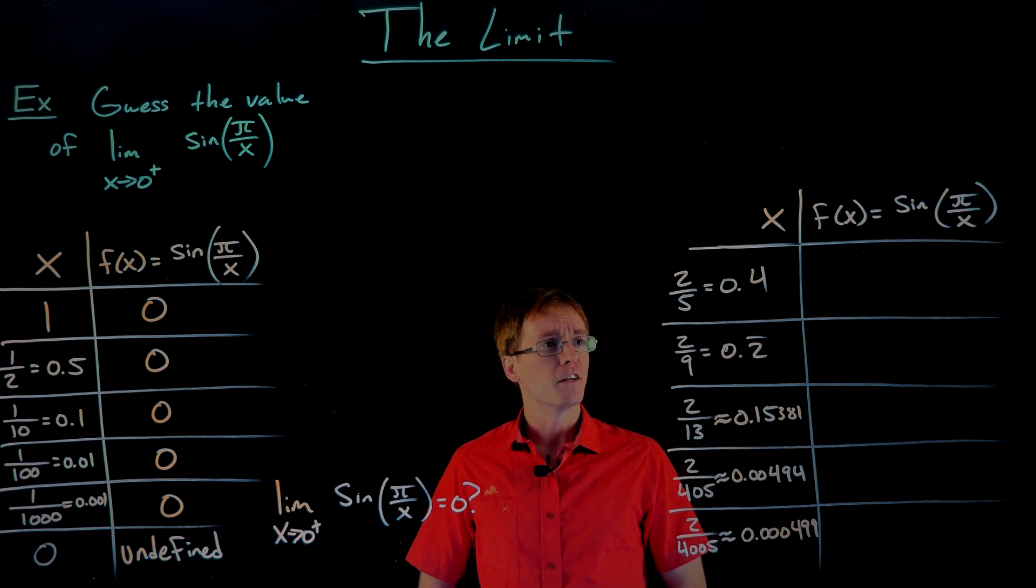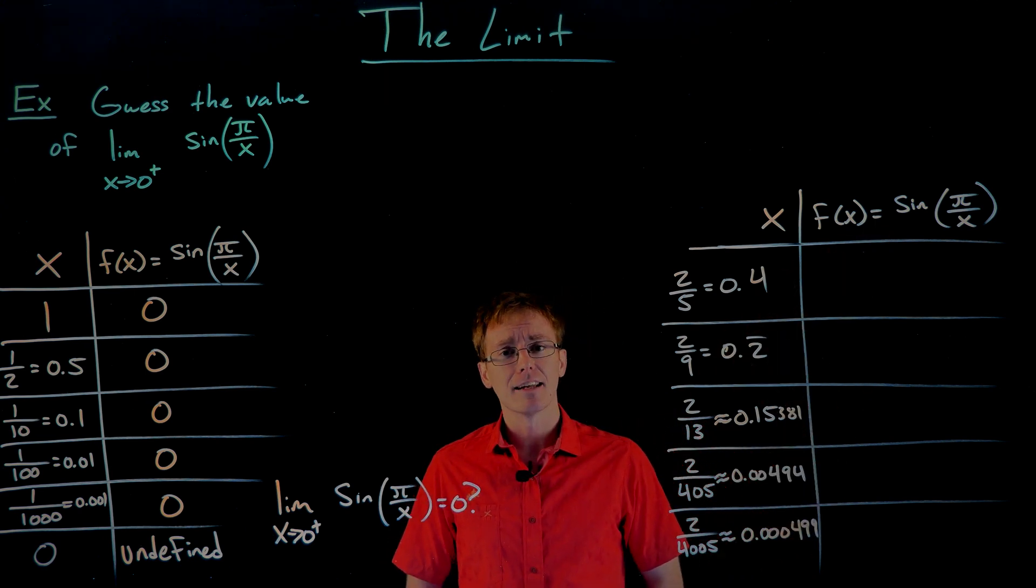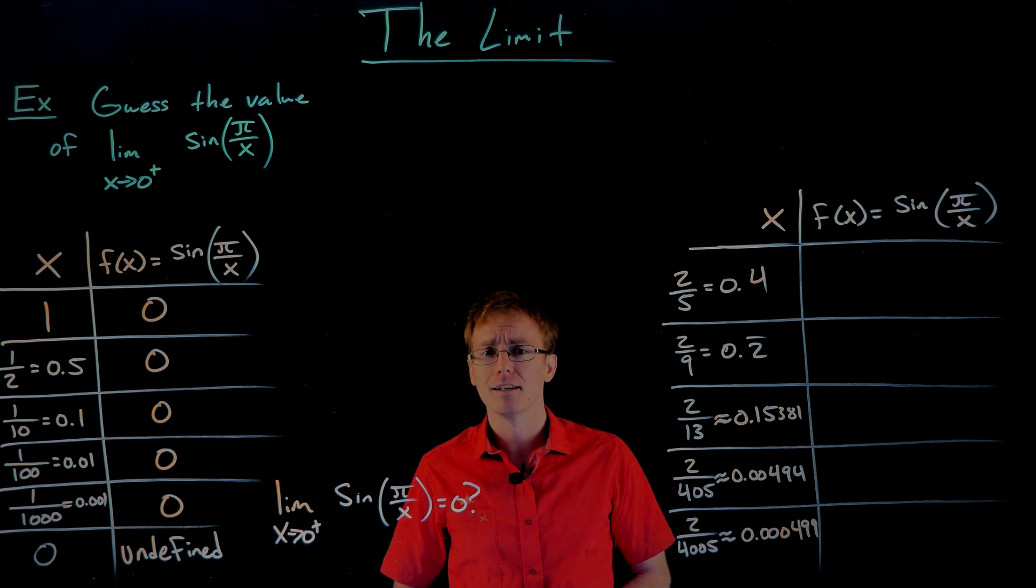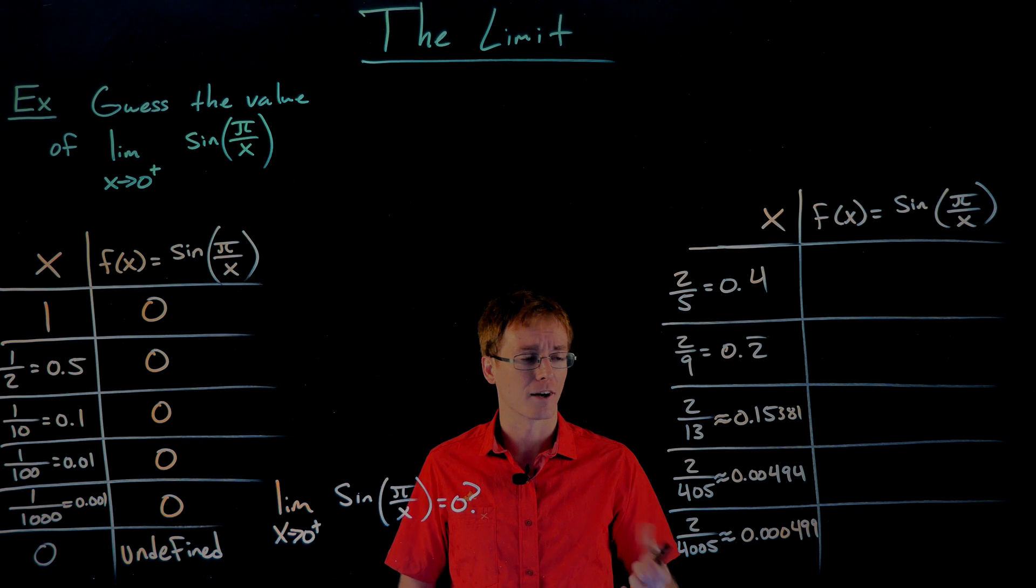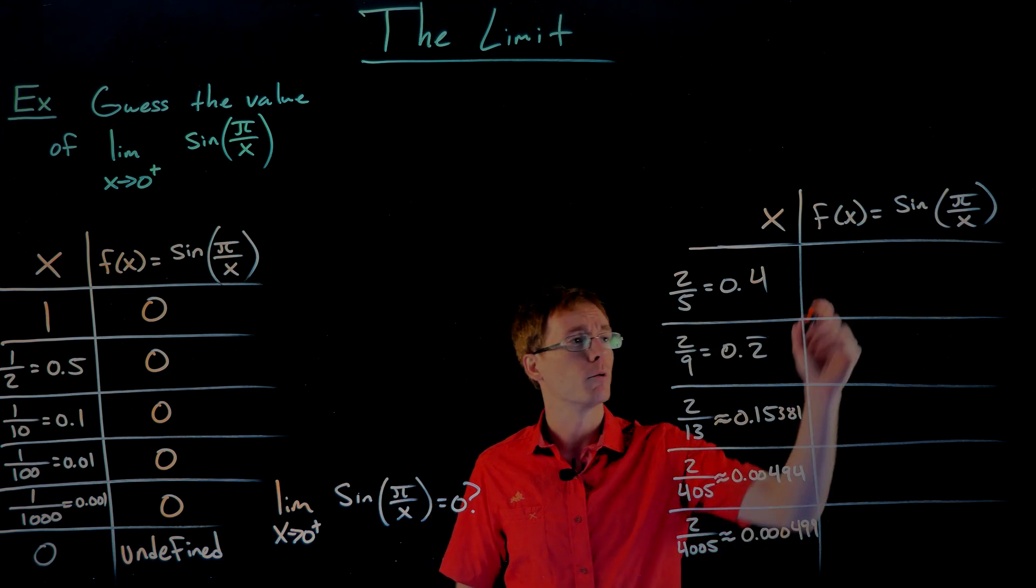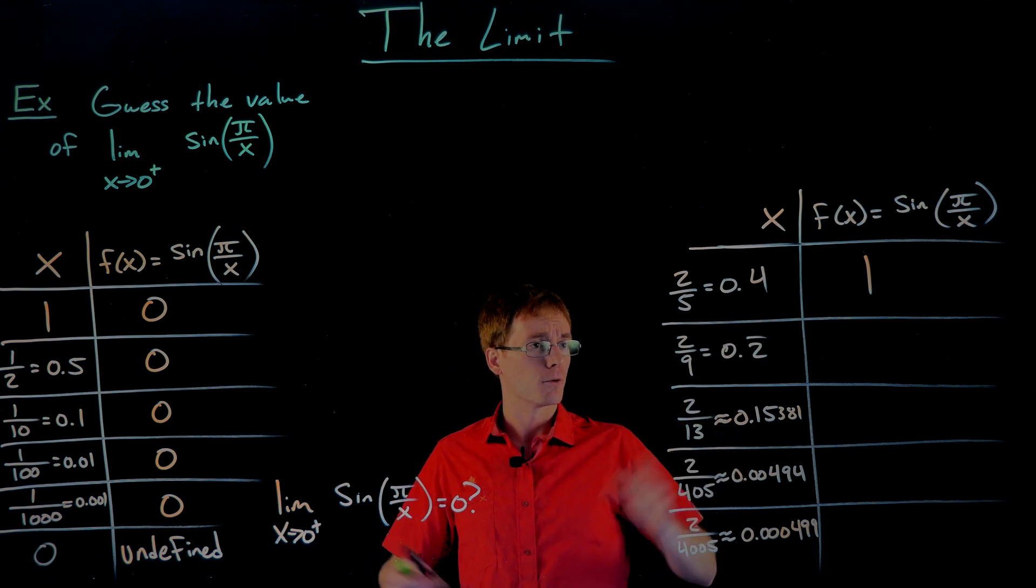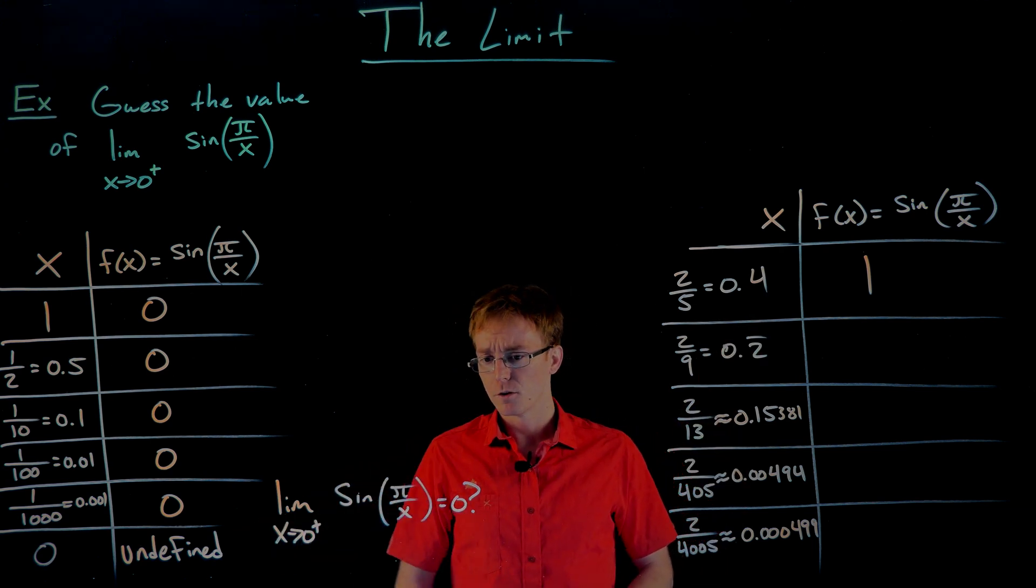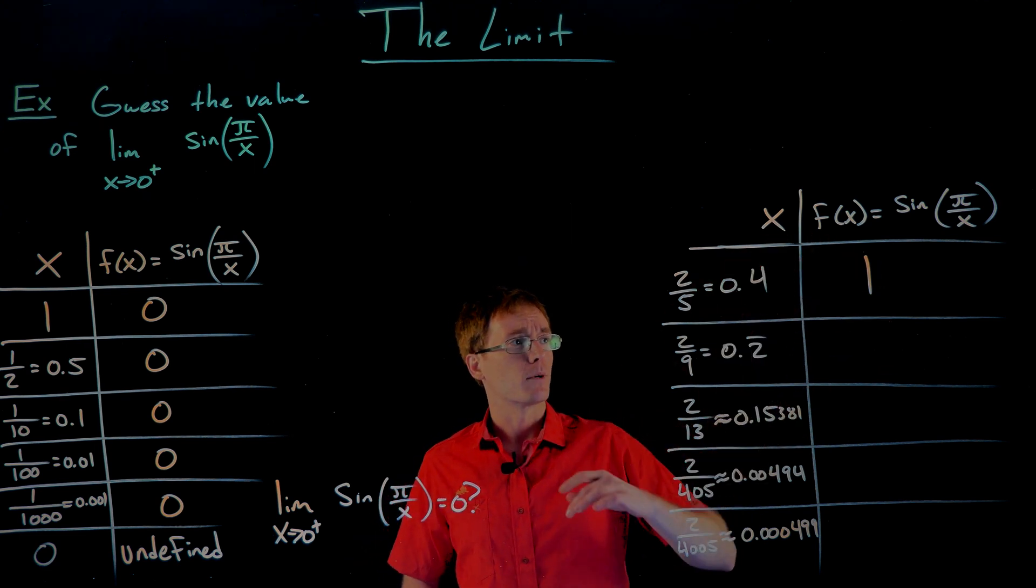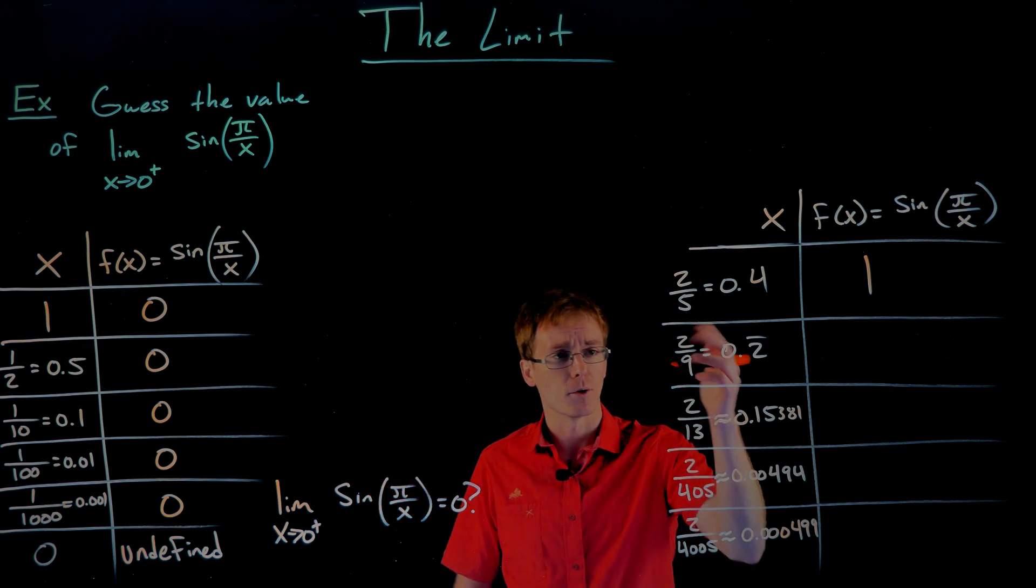If we start with our first x value of two fifths or 0.4, if we plug that into our function sine of pi over x, it ends up simplifying to give us sine of five pi over two, just really the reciprocal of that fraction times pi. Well, what is sine of five pi over two? You might have to think back to the unit circle or use our calculators to help us there. Make sure your calculator is in radian mode if you're doing that. But it ends up giving us the value of one. Okay. So we're still pretty far away from zero. We're at 0.4. In our previous approach, we thought that our limit was going to be equal to zero. Right now it looks like we're at one. Maybe as we go through this table, we'll get closer to zero, or maybe something else is going to happen. Let's go ahead and find out.